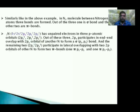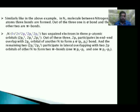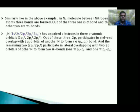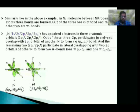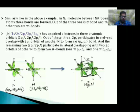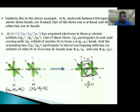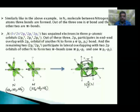The 2px atomic orbital of one nitrogen atom participates in end-to-end overlapping with the 2px atomic orbital of another nitrogen atom along the internuclear axis, resulting in a sigma bond. The remaining 2py–2py and 2pz–2pz atomic orbitals participate in lateral or sidewise overlapping to form two pi bonds between the nitrogen atoms.